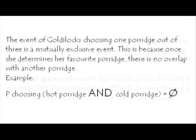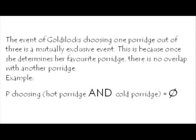The event of Goldilocks choosing one porridge out of 3 is a mutually exclusive event. This is because once she determines her favourite porridge, there is no overlap with another porridge. So, for example, the probability of her choosing a hot porridge and a cold porridge — that just doesn't exist.